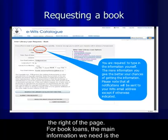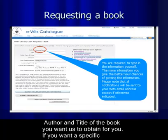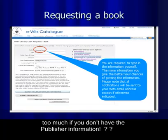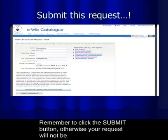The system defaults to a book request template. Please select from the options on the right of the page. For book loans, the main information we need is the author and the title of the book you want us to obtain for you. If you want a specific edition or year, please complete that information as well.